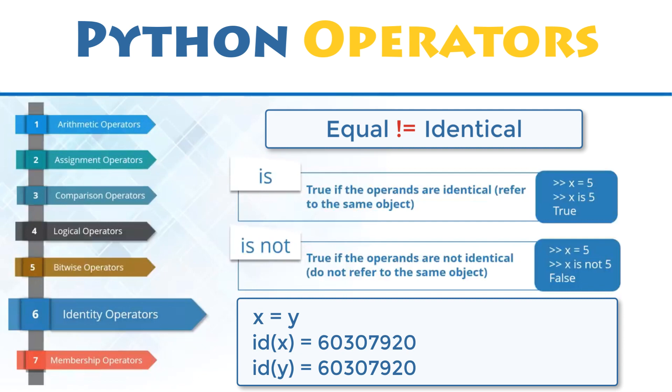You saw previously that when you make an assignment like X equals Y, Python merely creates a second reference to the same object, and you could confirm that fact with the id function. You can also confirm it using the is operator.